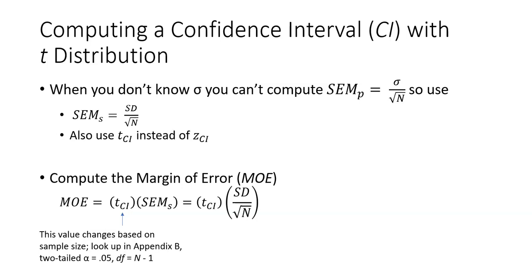The T distribution does change its shape based on sample size. So that means the factor that you need to use to compute this margin of error is going to vary based on sample size. So you'll need to look this value up in Appendix B.